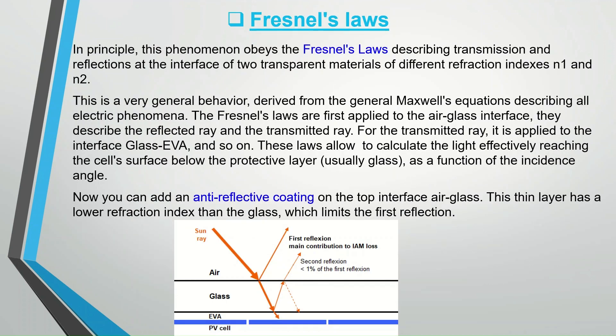This phenomenon obeys Fresnel's laws describing transmission and reflections at the interface of two transparent materials of different refraction indexes N1 and N2. This is a very general behavior derived from Maxwell's equations describing all electric phenomena. Fresnel's laws are first applied to the air-glass interface; they describe the reflected ray and the transmitted ray. For the transmitted ray, it is applied to the glass-EVA interface and so on. These laws allow to calculate the light effectively reaching the cell's surface below the protective layer, usually glass, as a function of the incidence angle.